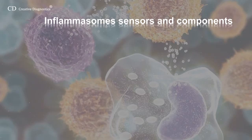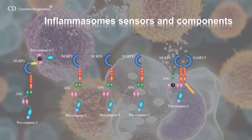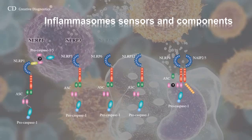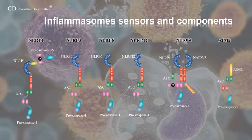Several inflammasome sensor molecules can trigger the formation of inflammasomes. Most of the inflammasomes described to date contain a NOD-like receptor sensor molecule, namely NLRP1, NLRP3, NLRP6, NLRP12, or NLRC4. Other inflammasomes have been described that contain the pyrin family member absent in melanoma-2, AIM2, rather than a NOD-like receptor.